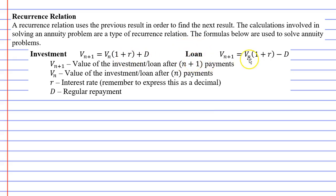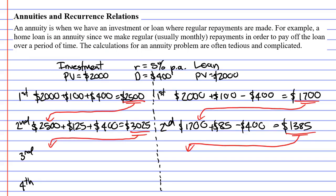When people look at these formulas, they quite often become overwhelmed and confused. I'm going to break down how these formulas work in the next example. But I do want to point out something that might look familiar to you. For the investment, you'll notice at the end of the formula we add the repayment. And for the loan, at the end of the formula, we subtract the repayment — which is what we did here. For the investment, we added the repayment of $400, and for the loan, we subtract the repayment of $400.